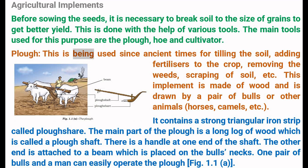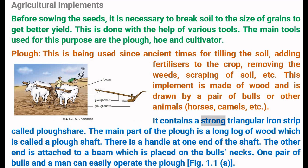Plow. This has been used since ancient times for tilling the soil, adding fertilizers to the crop, removing weeds, scraping of soil, etc. This implement is made of wood and is drawn by a pair of bulls or other animals such as horses or camels. It contains a strong triangular iron strip called a plowshare. The main part of the plow is a long log of wood called a plow shaft. There is a handle at one end of the shaft; the other end is attached to a beam placed on the bulls' necks. One pair of bulls and a man can easily operate the plow.